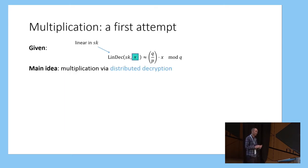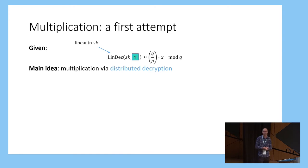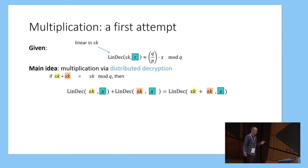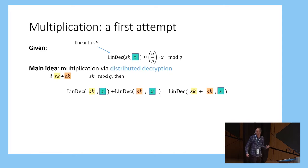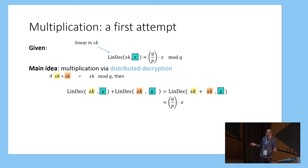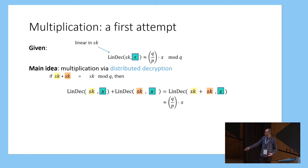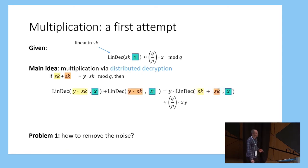Our main idea is to do multiplication via distributed decryption. Imagine the parties first have additive secret shares of the secret key for this encryption scheme and some public ciphertext encrypting a value x. If we apply the linear part of decryption — the function lindec, which is linear in the secret key — each party just applies this locally to their secret key share given the ciphertext. Because this is a linear function, this gives them additive shares of the approximation of q/p times x.